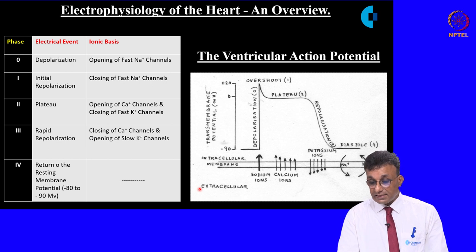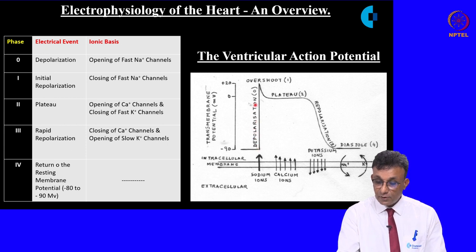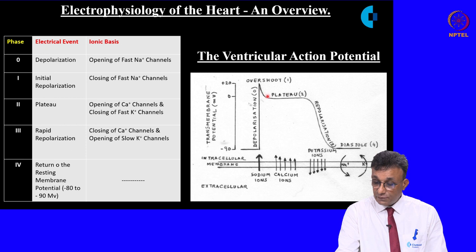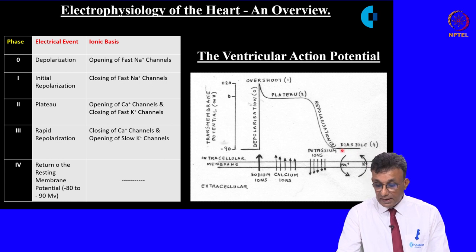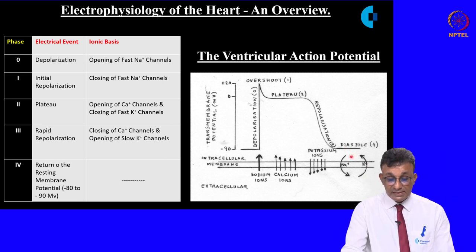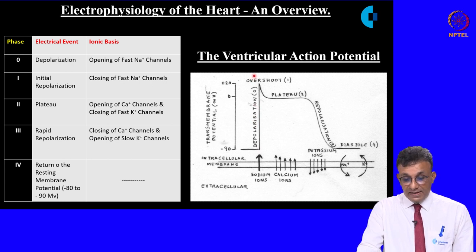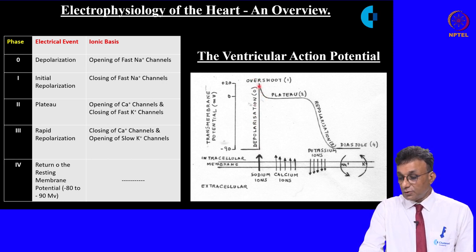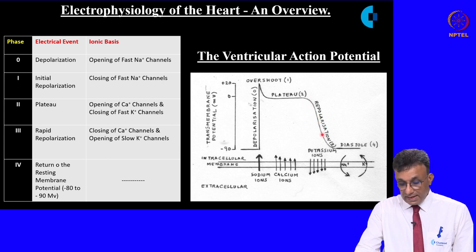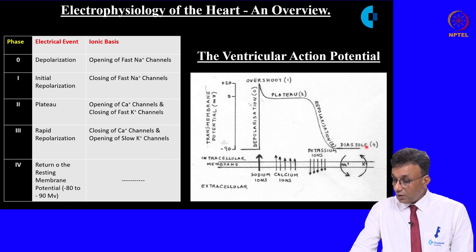The ventricular action potential has four phases. Phase 0 is depolarization, followed by early repolarization at phase 1, a plateau at phase 2, late repolarization at phase 3, and phase 4 returning to the resting membrane potential. The ionic basis: phase 0 is due to opening of fast sodium channels; phase 1 to closing of fast sodium channels; phase 2 to opening of calcium channels; phase 3 to closing of calcium channels; and phase 4 is the return to resting membrane potential.